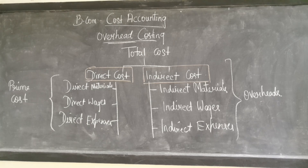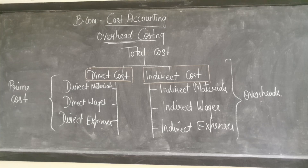In direct cost, what comes is direct materials, direct wages, and direct expenses. All this direct cost is known as prime cost. In our preparation of cost sheet chapter, we have studied about prime cost.